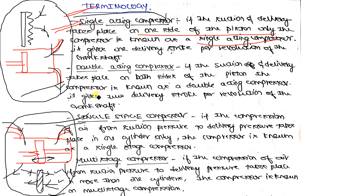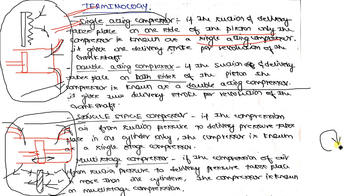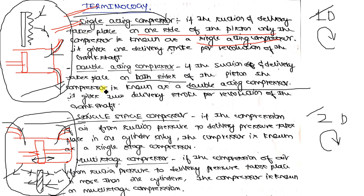In a double acting compressor, suction and delivery takes place on both sides of the piston, giving two delivery strokes per revolution of the crankshaft. In a single acting arrangement, there is one delivery stroke for every revolution of the crankshaft, whereas in a double acting compressor there are two delivery strokes for every revolution.